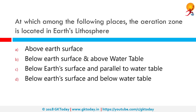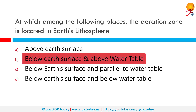At which among the following places is the zone of aeration located in Earth's lithosphere? The zone of aeration is the region between the Earth's surface and the water table. The main components of this region are the soil and rocks. The correct answer is below Earth's surface and above the water table.